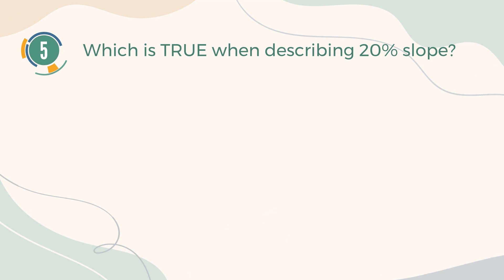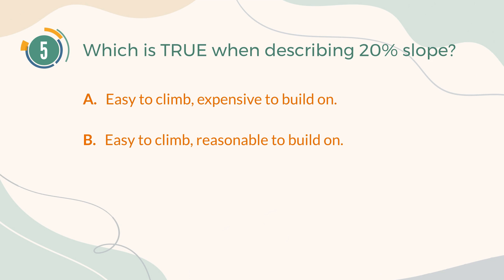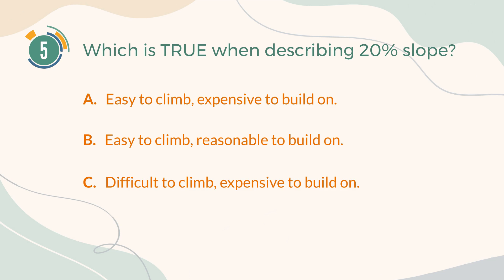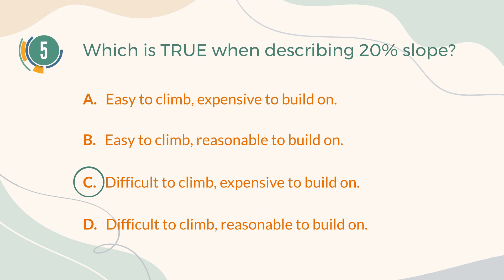Number 5. Which is true when describing 20% slope? A. Easy to climb, Expensive to build on. B. Easy to climb, Reasonable to build on. C. Difficult to climb, Expensive to build on. D. Difficult to climb, Reasonable to build on. The correct answer is C. Difficult to climb, Expensive to build on.